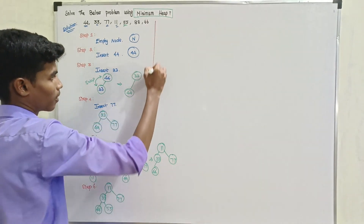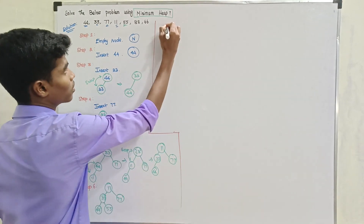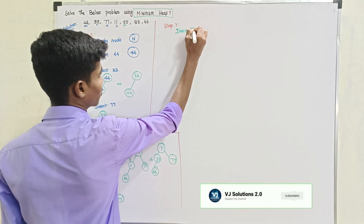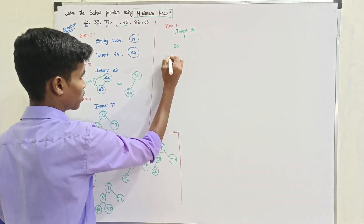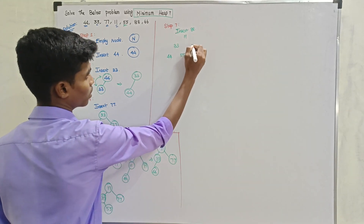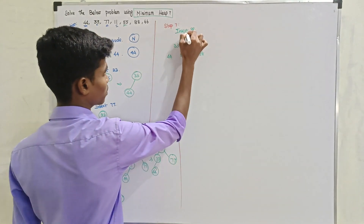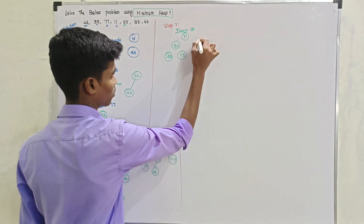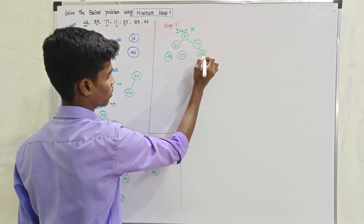Step 7: insert 88. 11, 33, 44, 55, 77, 88 — so the maximum values, the condition will be satisfied. Step 7.